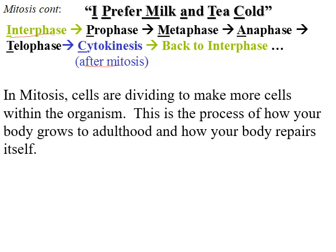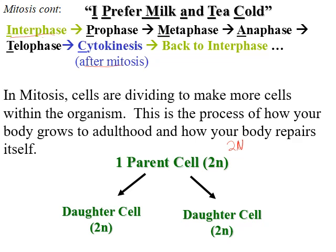In mitosis, cells are dividing to make more cells within the organism — this is how your body grows to adulthood and how your body repairs itself from injuries. You start off with one parent cell, and the symbol biologists use is 2N — sometimes lowercase, sometimes uppercase — which means diploid. Whatever number of chromosomes the parent cell has, it's a full set. In humans, that's 46. In the daughter cells, they too are diploid, so each daughter cell also gets 46 chromosomes. This is important in contrast to meiosis, another type of cell division, where you don't get the same number of chromosomes from parent to daughter cells.